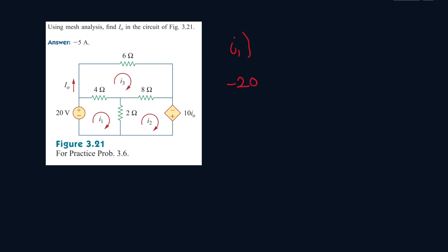So it starts from minus 20 volts, plus 4(I1 minus I3), plus 2(I1 minus I2). And then simplifying it, we have minus 20 plus 6I1 minus 4I3 minus 2I2. Let's rearrange everything and bring the 20 to the other side. So 6I1 minus 2I2 minus 4I3 equals 20.